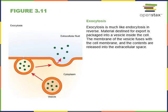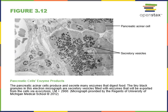Exocytosis is essentially the opposite of endocytosis and is another active transport process. In exocytosis, a vesicle merges with the plasma membrane, spilling its contents into the extracellular fluid. It is a common mechanism for cells to release hormones or neurotransmitters.